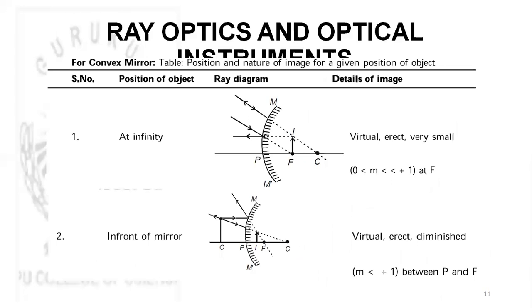In case of a convex mirror, there are two cases. When the object is at infinity, the image is formed at the focus. In both cases the image formed is virtual, erect, and diminished. When the object is kept anywhere on the principal axis in front of the mirror, the image will be formed between the pole and the focus.